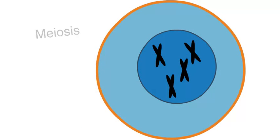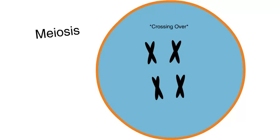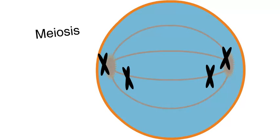Meiosis starts in much the same way. The chromosomes line up in pairs so that crossing over can occur. This increases the genetic diversity of the end products. The homologous chromosomes are separated into two cells.